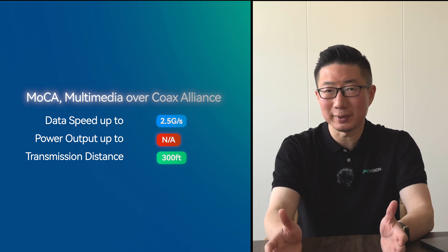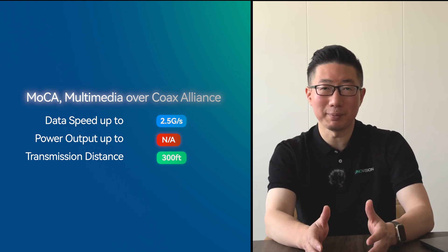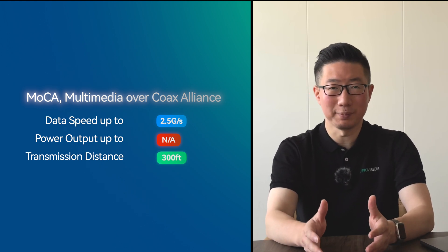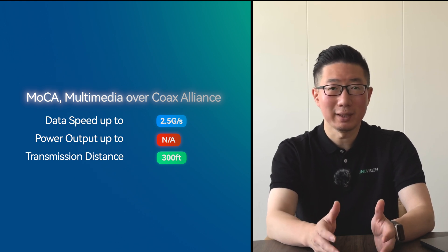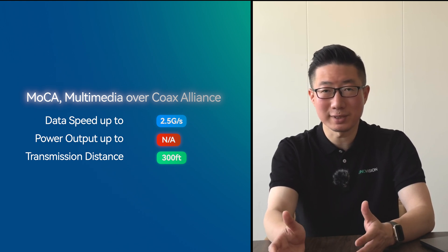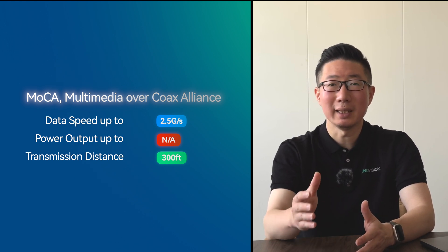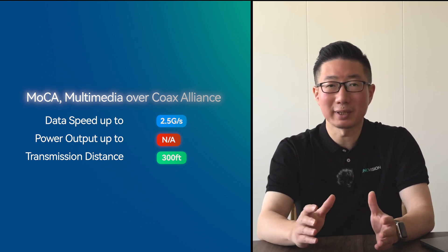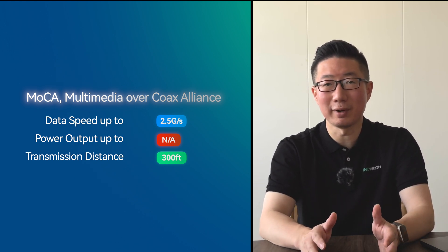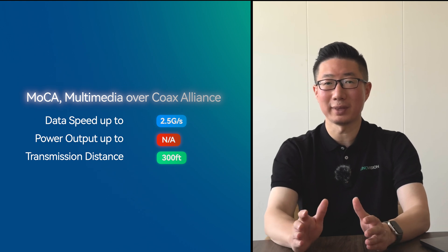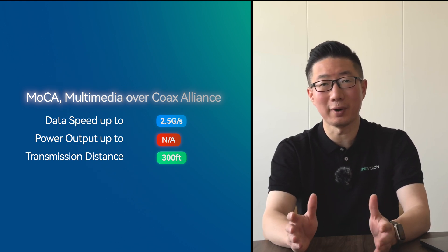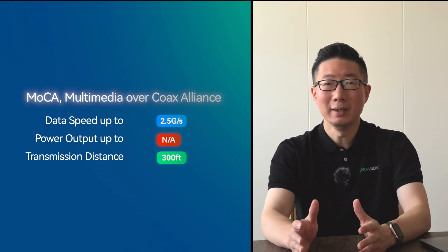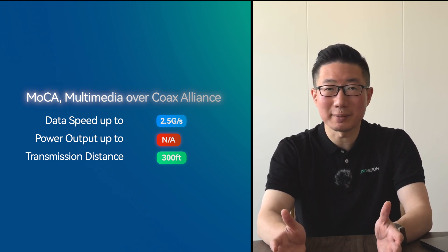MoCA's range for a single-hop connection goes up to 300 feet with MoCA 1.1, 2.0, 2.5, and 3.0 standards. It is perfect for covering every corner of your home without sacrificing speed or quality.